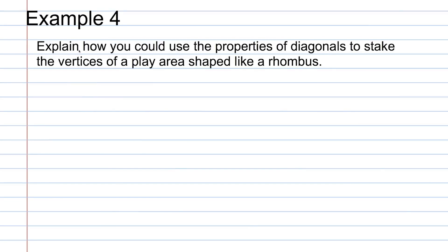Example 4: explain how you could use the properties of diagonals to stake the vertices of a play area shaped like a rhombus. A couple of key words here — we're going to use the properties of the diagonals of a rhombus to stake out a play area. We know the diagonals of a rhombus are perpendicular and we know they bisect each other.